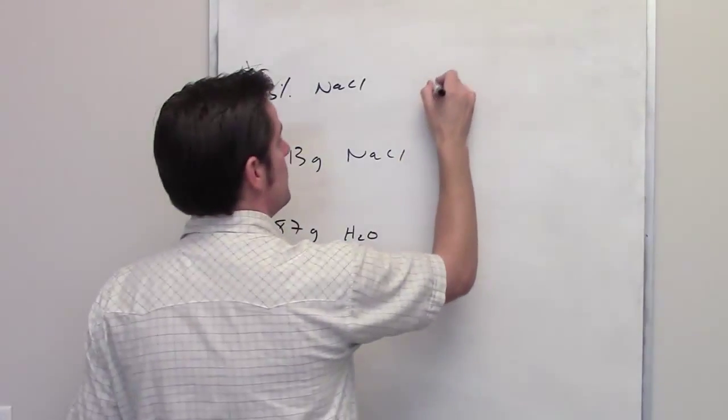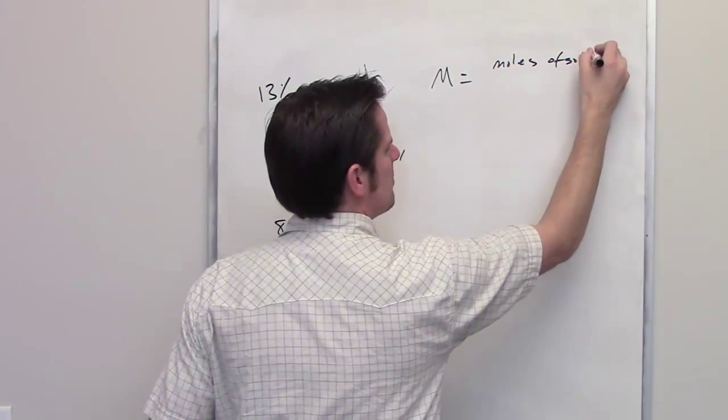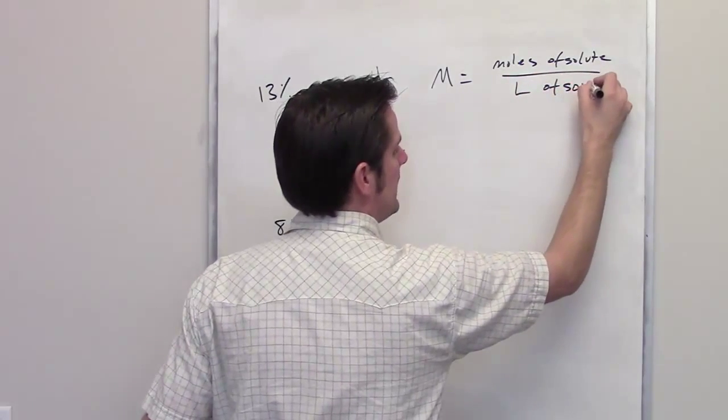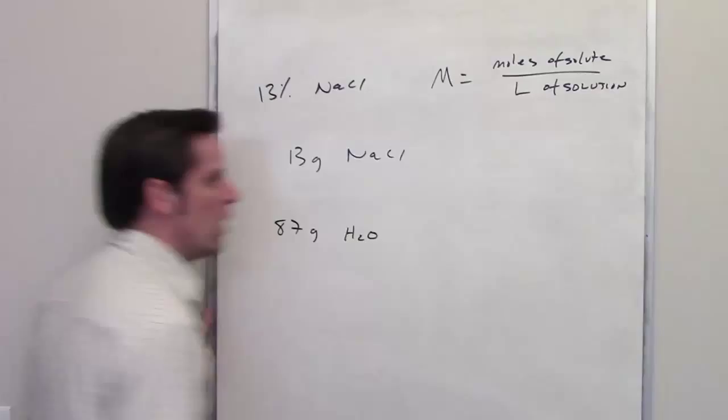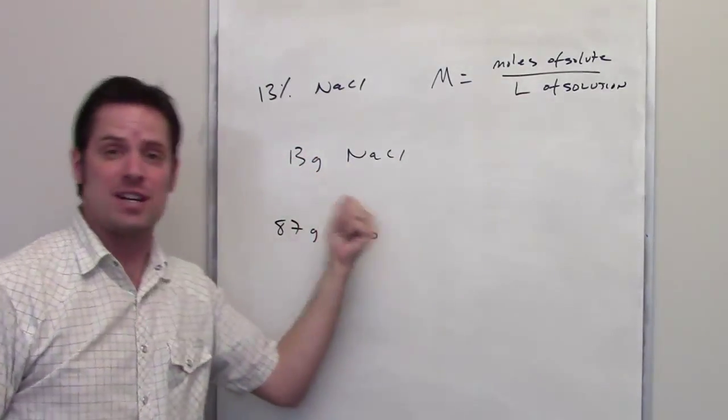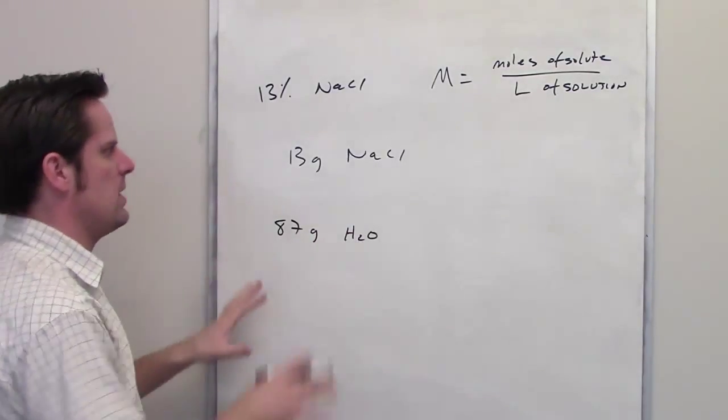Keeping in mind that molarity equals moles of solute divided by liters of solution, what we need to determine now is the total number of moles of solute if we had 13 grams of sodium chloride, and then how many liters of solution this would correspond to.